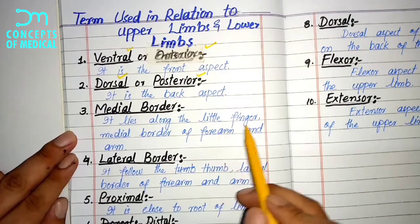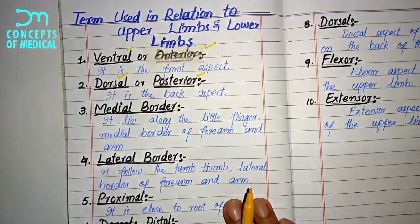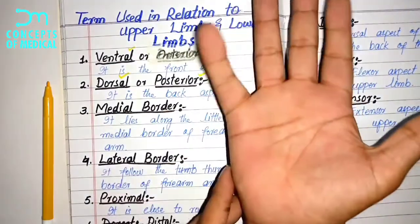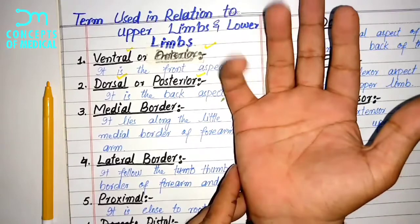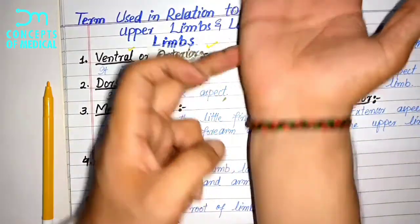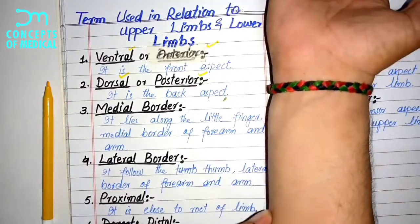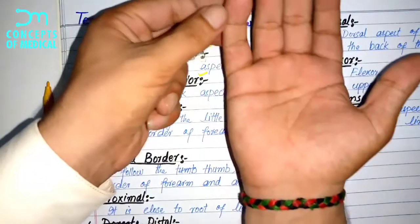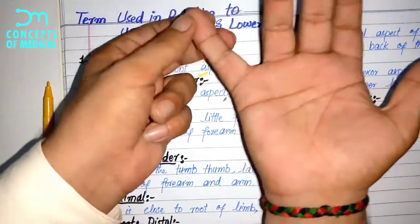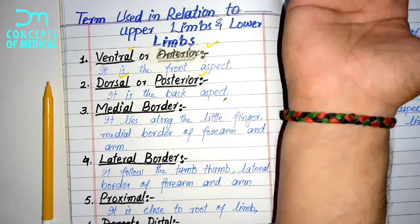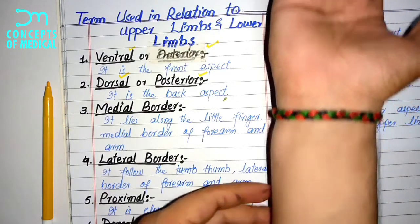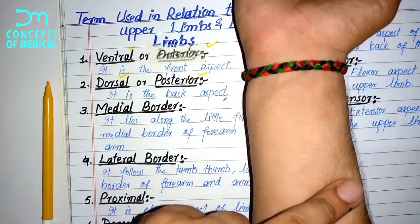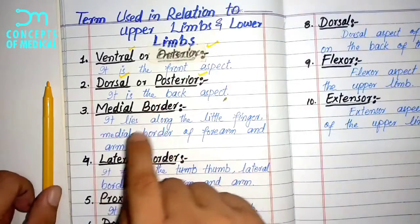The third term is the medial border. It lies along the little finger — the medial border of the forearm or arm. Any structure along the little finger uses the medial term. For example, the ulna bone and the median nerve are along the little finger side, so we describe the ulna bone as medially present relative to the radius.